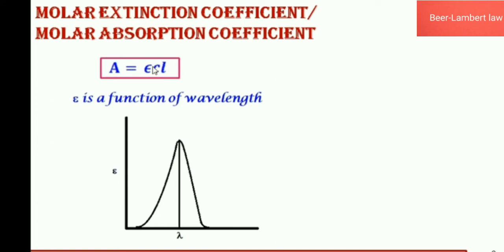You should understand that epsilon ε is a function of wavelength. When we plot a graph of epsilon versus wavelength (lambda), we get a curve, and at the peak — where epsilon is maximum — we choose that lambda for our studies. For example, to analyze ferric chloride solution, we use a filter to allow only 480 nanometers because at 480 nm the epsilon is maximum. This is how we choose the appropriate wavelength.